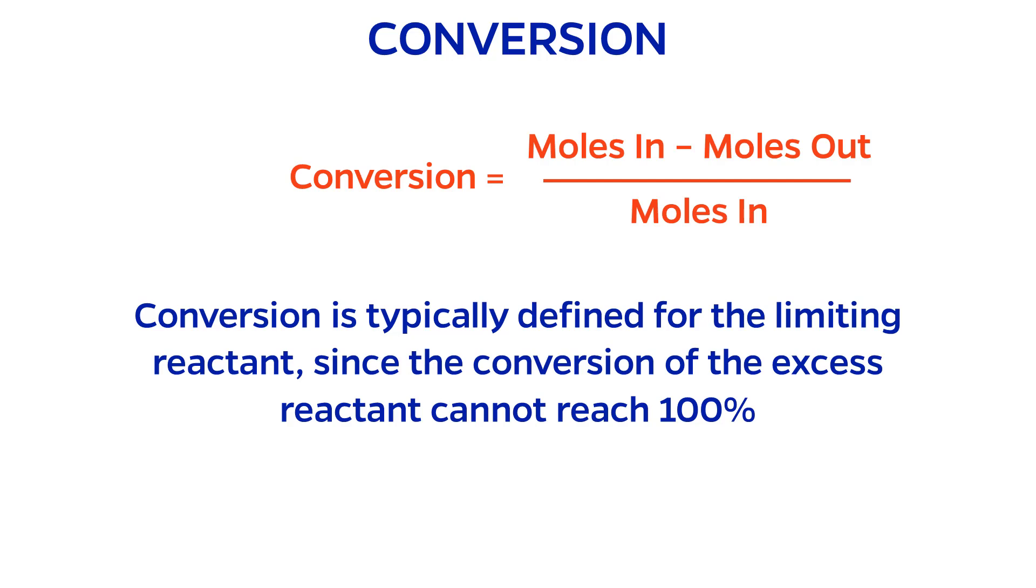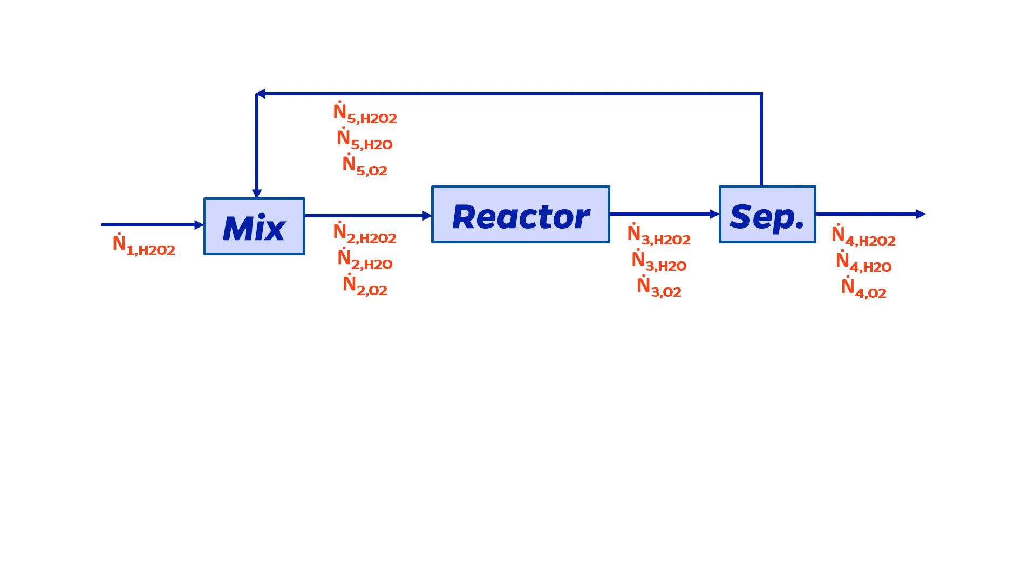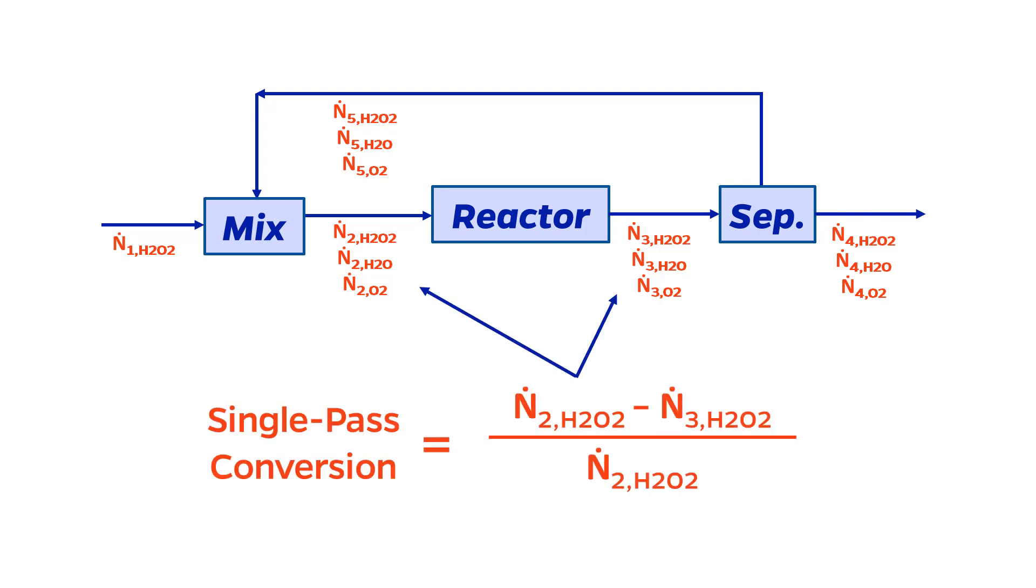In processes with recycle, we must make a distinction between single pass versus overall conversion. Single pass conversion refers to the reactant directly into or out of the reactor. Overall conversion compares the reactant into or out of the process.